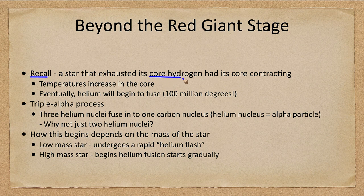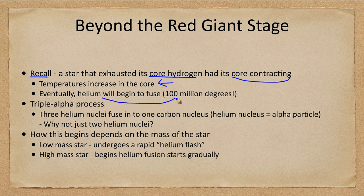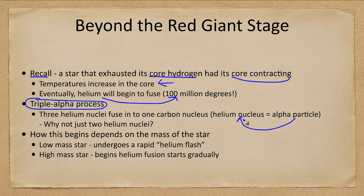At this point we look at stars that have exhausted their hydrogen in the core. The core is contracting, which means temperatures will increase and get hotter and hotter. For the Sun, it started at 15 million Kelvin, and eventually once it gets to 100 million Kelvin, helium will begin to fuse by what we call the triple alpha process. It's called triple alpha because the alpha particle is the helium nucleus.